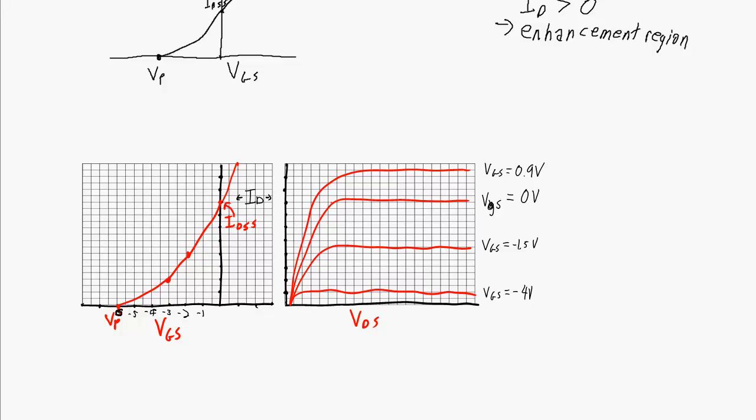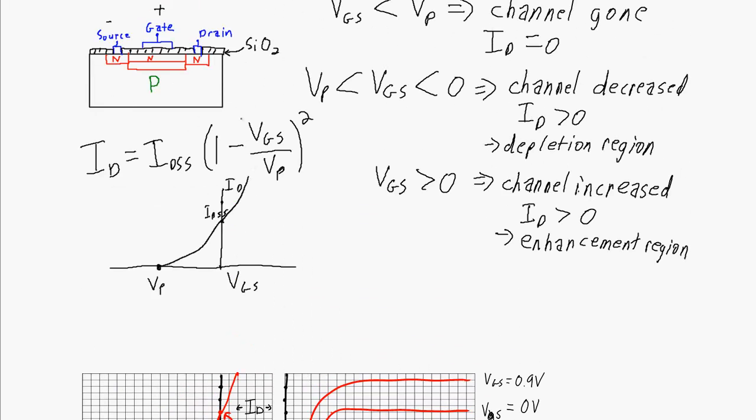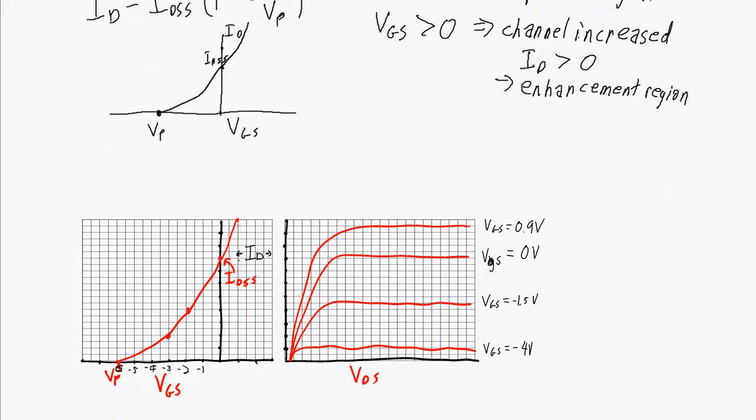Here's another picture showing the relationship between VGS and ID. Here's my IDSS, which would be the maximum drain current for a JFET. But because I have a silicon dioxide layer between my gate and my N-channel, I don't have an actual electrical connection, so I can make my gate more positive than the source, which allows me to increase my drain current beyond IDSS.